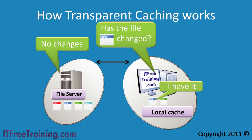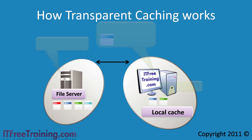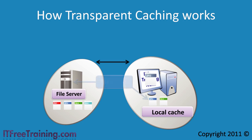By checking the local cached file against the copy on the share first, this prevents Windows from reading a file in the local cache that is different from the server version. If the user attempts to write a file that has been cached, the write is directed to the server and the local copy is also updated.